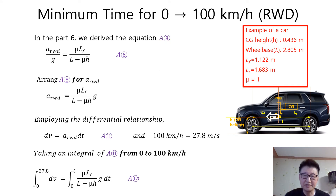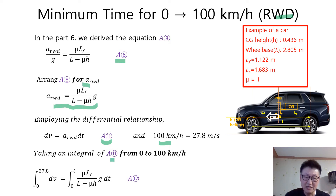Let's begin with the rear-wheel drive. In the Part 6 video, we derived equation a8. Arranging a8 for a sub RWD, we can obtain this equation. Employing the differential relationship, we can get equation a11. Employing the unit conversion — 100 km per hour equals 27.8 m per second — and taking an integral of equation a11 from 0 to 100 km per hour, we can obtain equation a12.